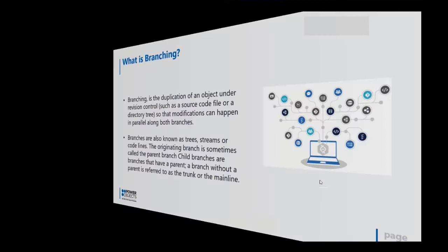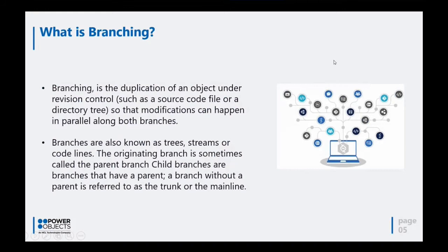So what is branching? We use branching to duplicate objects that are under source control. This is important because we want to make sure that modifications can happen in parallel. Especially in Dynamics 365 F&O implementations, using Visual Studio you can have multiple developers working in your project. We want to provide the basics so developers can utilize branching to guard your code, and invite multiple developers into a project so they can work on multiple objects — that's why branching is so important.